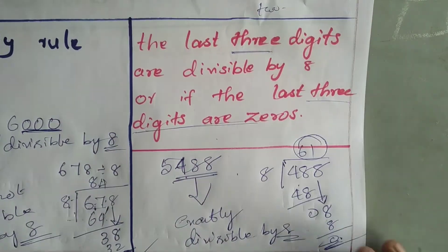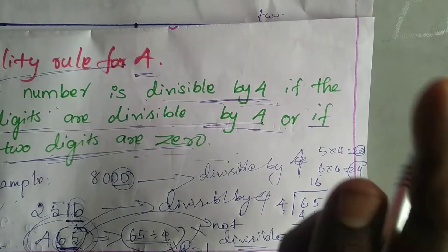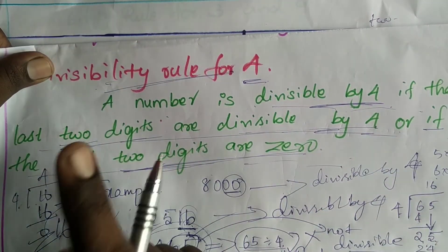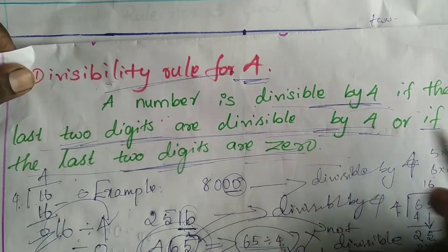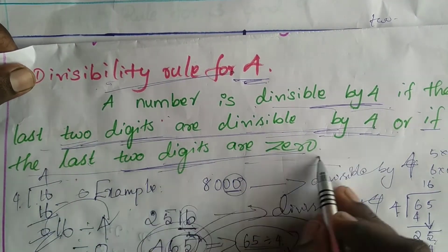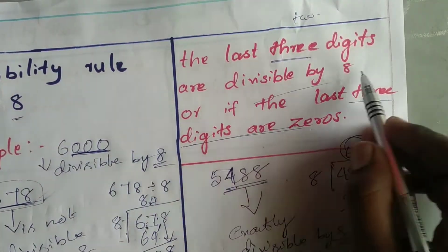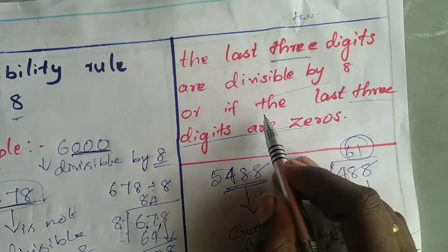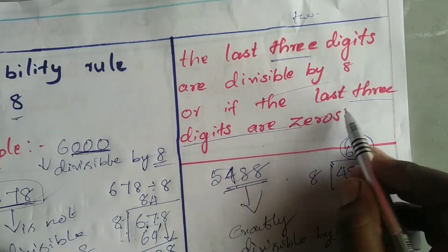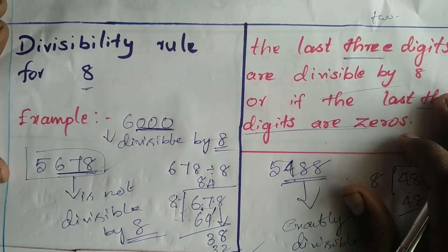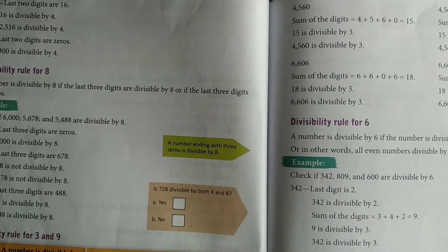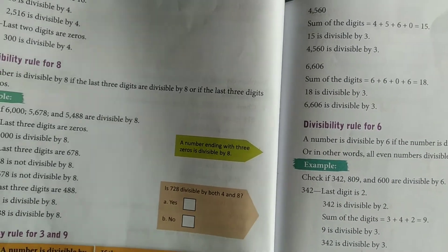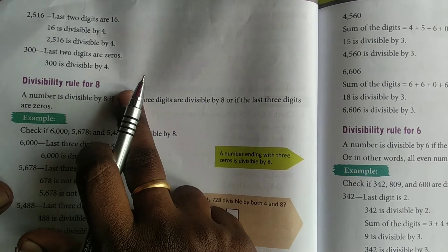For 4 and 8, the divisibility rules are similar with a slight change. For 4: last 2 digits are divisible by 4, or last 2 digits are 0. For 8: last 3 digits are divisible by 8, or last 3 digits are 0. Note the slight change and learn it clearly. Please take your textbook to page 82, divisibility rule for 8, and underline: 'a number ending with 000 is divisible by 8.'